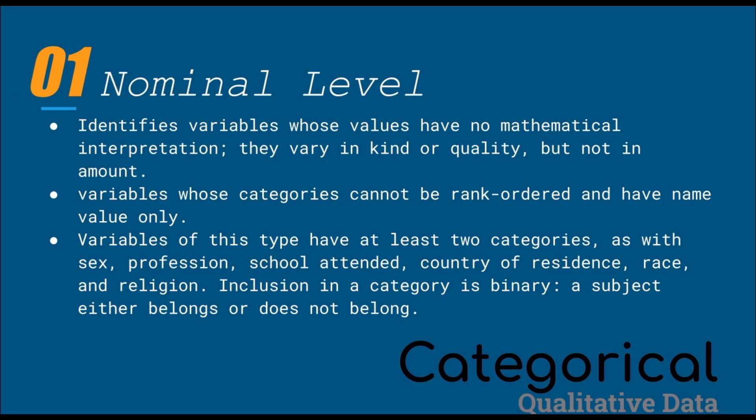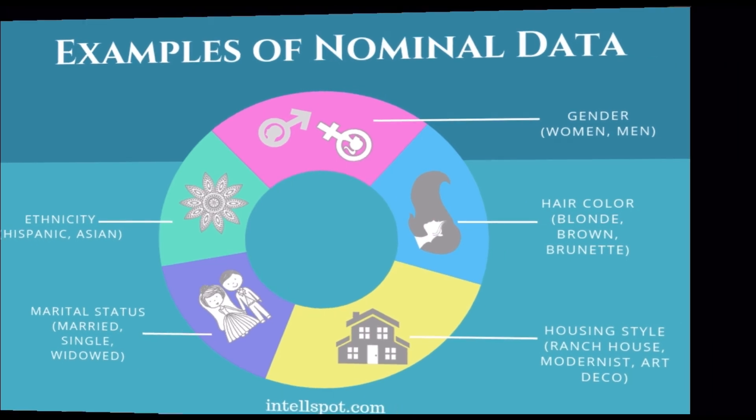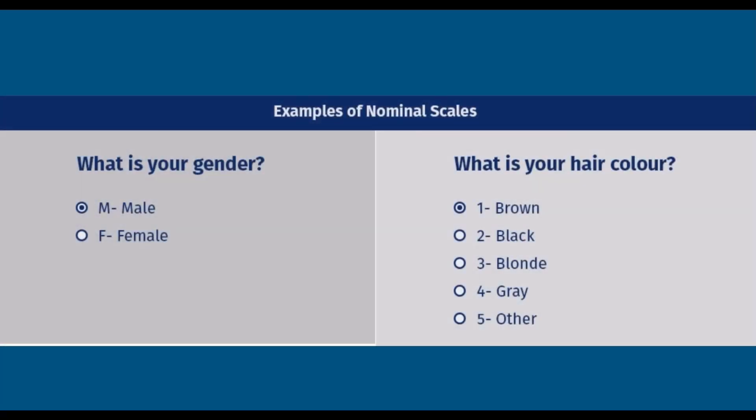Examples of nominal data include gender — either women or men — hair color, housing style, marital status, and ethnicity. Commonly, this could be the format in a survey research instrument.